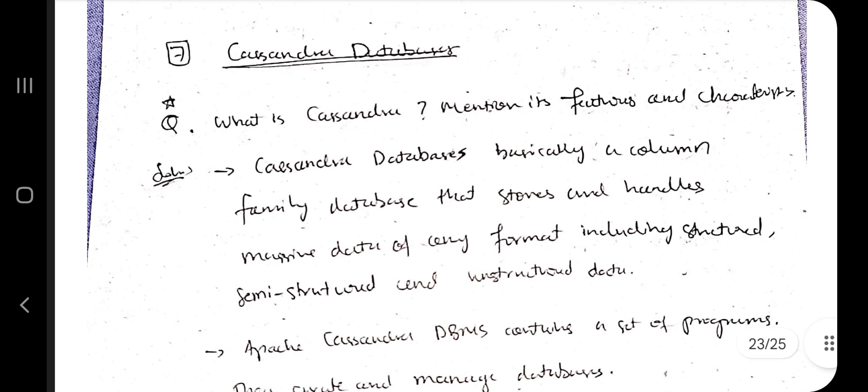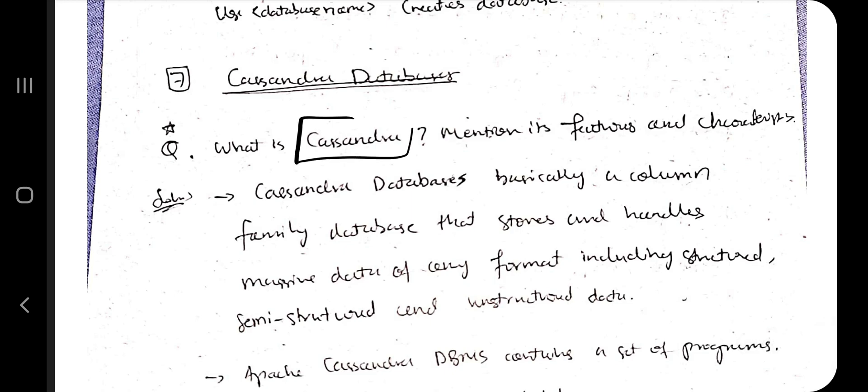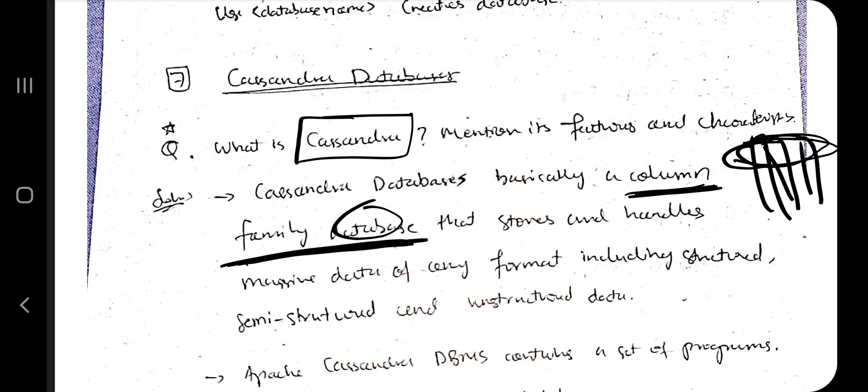Moving on to the second topic which is Cassandra. Here we have two important questions. What is Cassandra? Cassandra is a column family database. Column family means this is one column, this is another column. So these columns if they come together that is called column family, and if they store data it is called column family database.